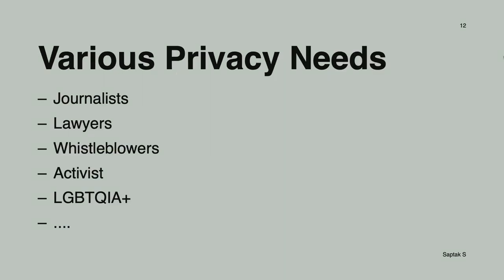Just like there are different accessibility needs, privacy needs also vary from person to person — it depends on their security needs and threat model. For example, journalists and lawyers might have a high security need. It also depends on the country they are in, what kind of laws and government exist there, which changes their threat model.